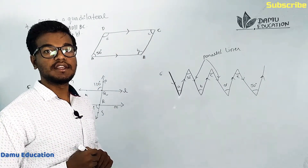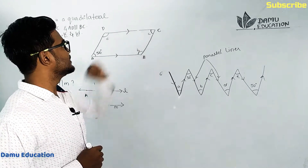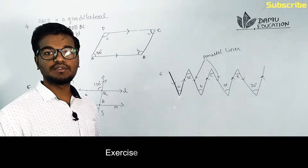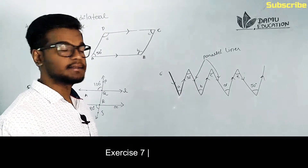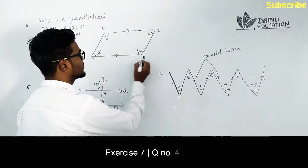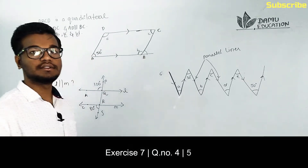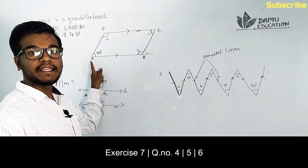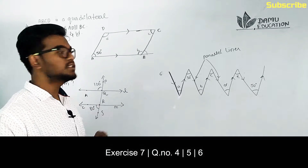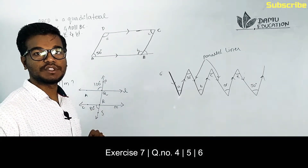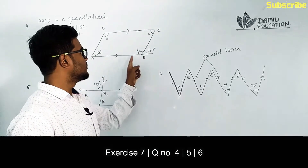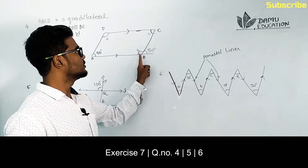Since AB and DC are parallel, AD and BC act as transversals to both lines. If we extend the lines, angle A and angle B are corresponding angles. If AB is the transversal, then this angle is 50 degrees.